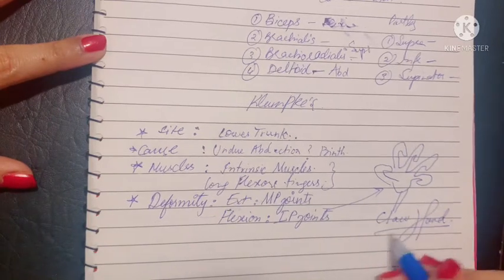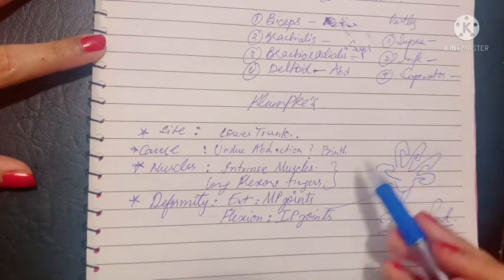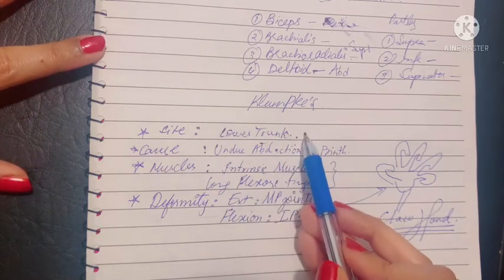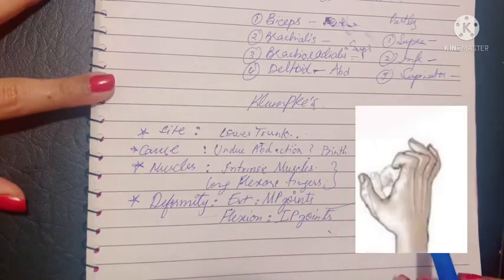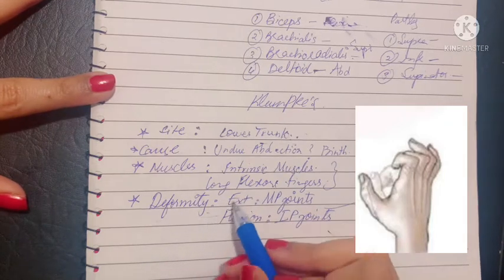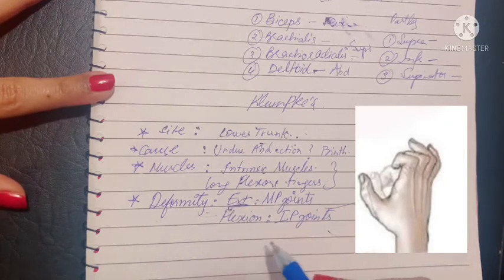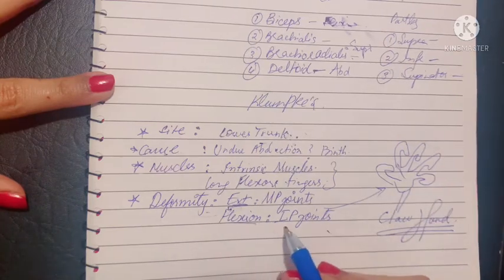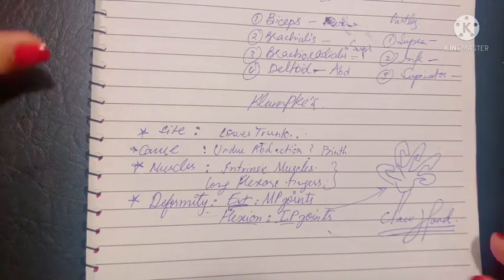Whenever there is ulnar nerve damage, it results in claw hand. In Klumpke's, there is lower trunk damage forming the medial cord, resulting in claw hand. The deformity is hyperextension at the metacarpophalangeal joints and flexion of the interphalangeal joints.